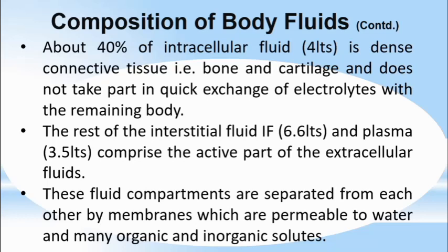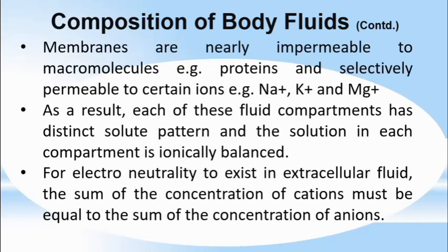The rest of the interstitial fluid — about 6.6 liters — and plasma — about 3.5 liters — comprise the active part of the extracellular fluid. These fluid compartments are separated from each other by membranes which are permeable to water and many organic and inorganic solutes. Membranes are nearly impermeable to macromolecules like proteins, and selectively permeable to certain ions like sodium, potassium, and magnesium. As a result, each fluid compartment has a distinct solute pattern, and the solute in each compartment is ionically balanced.